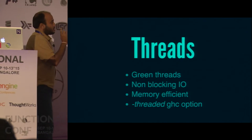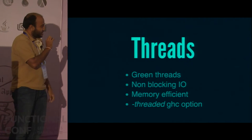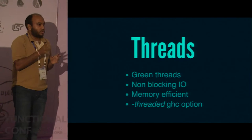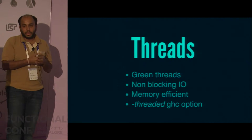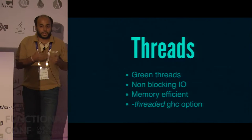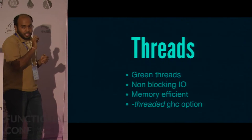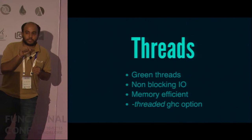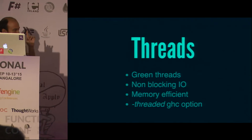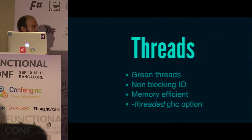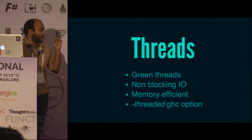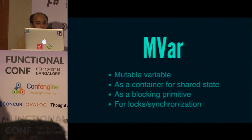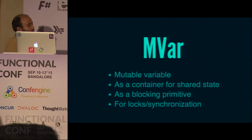To enable threading, you give the '-threaded' option when compiling your code and the Haskell threaded runtime will be included in your program. You can also specify the number of cores you want to run on at runtime. So that's what fork IO does — it launches a green thread, which is very efficient.